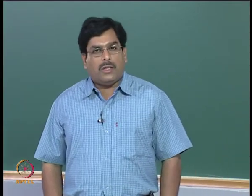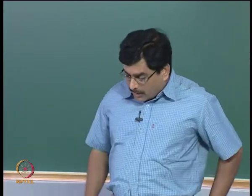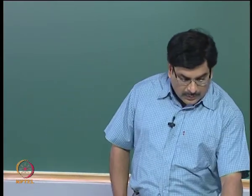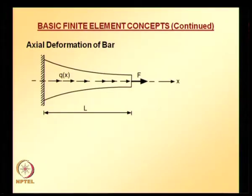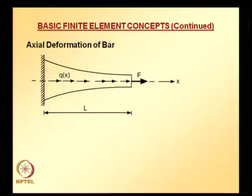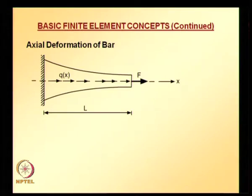We have taken a boundary value problem, the physical phenomena of which we are not aware of. So it is time for us to start looking at some physical applications. For that, I have taken a simple example: axial deformation of a bar. Here, for generality, the cross-sectional area of the bar is taken to be varying. As indicated in the figure, the x-axis is measured from the left side, where x equals 0 at the left side and x equals L at the right side. At the right side there is a point load applied F.